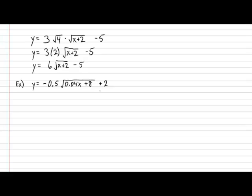Alright, let's see how you guys did. First things first, I'm going to apply the common factor technique to the expression inside the radical. So the next step would be Y equals negative 0.5 multiplied by the square root of — here comes the common factor technique — I'm going to factor out the 0.04. The result from the common factor technique leaves behind an X plus 200, and the K value is never touched. Already, you can see that the true B value is 0.04, and more importantly, the true H value is negative 200.